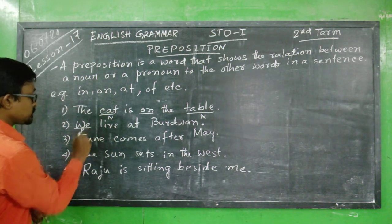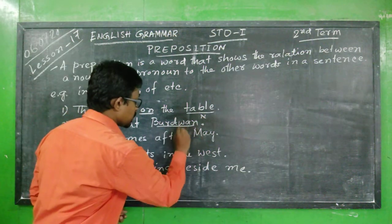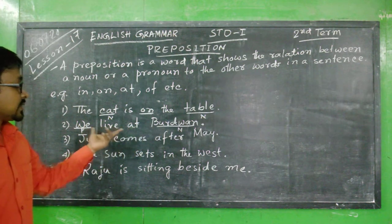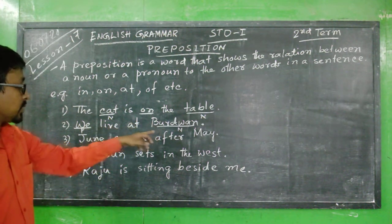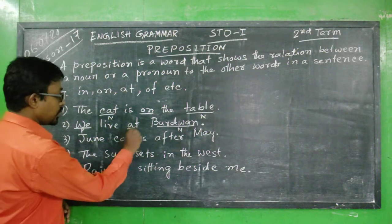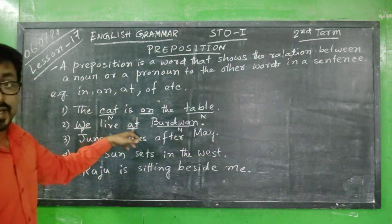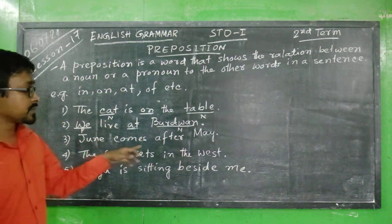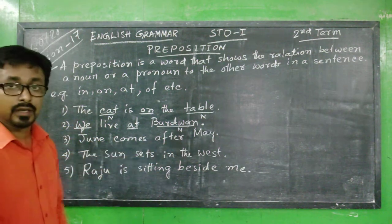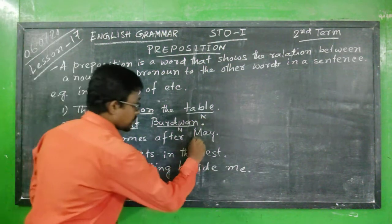Another example: 'We live at Birtone.' Here, 'we' is the pronoun and 'Birtone' is the noun. The relation between them is 'at', so 'at' is the preposition. Next: 'June comes after May.' Here there are two nouns — June and May.